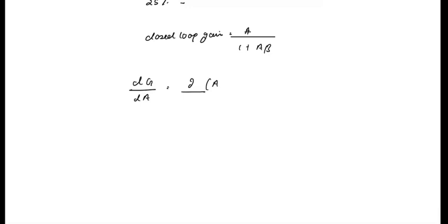the differentiation of A over 1 plus A beta with respect to A is equal to 1 over (1 plus A beta) whole square.